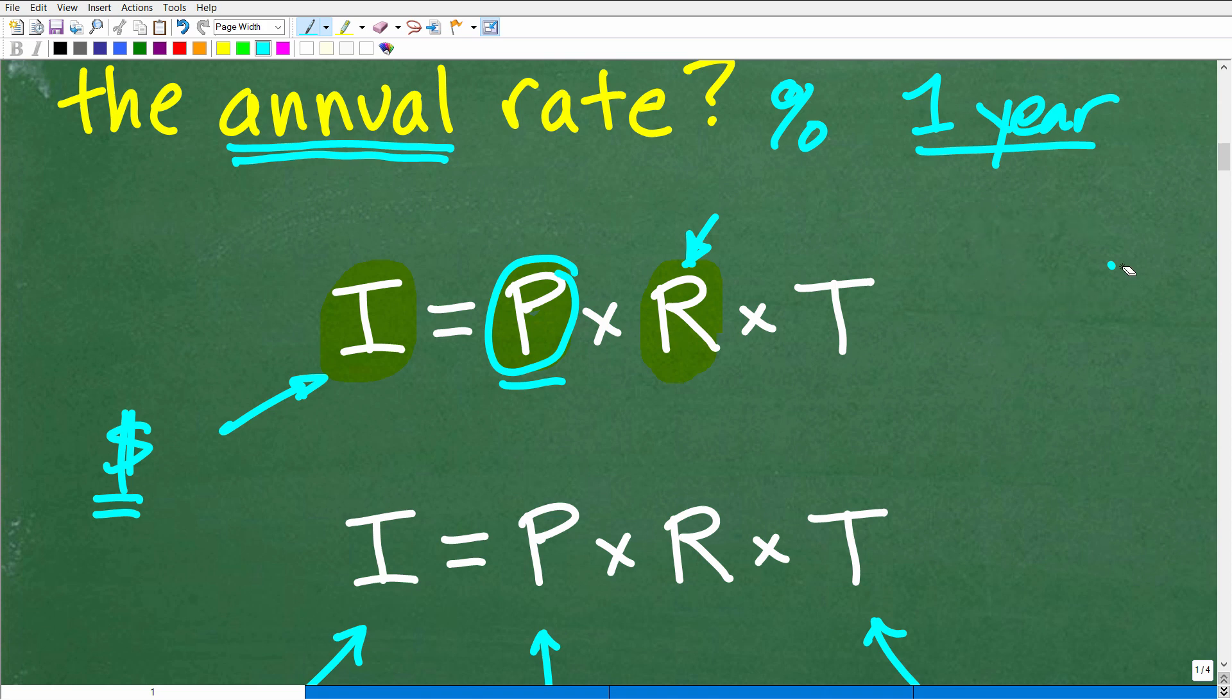I don't want to get too detailed about this, but you want to be thinking in terms of one year. So our rate is in one year and our time for this particular formula is going to be in terms of years.